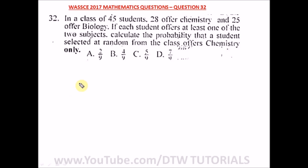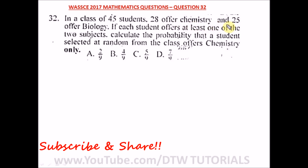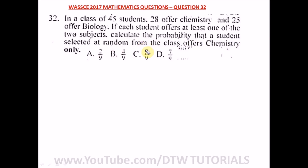Question 32 of WAEC 2017 Mathematics past questions. It says: in a class of 45 students, 28 offer chemistry and 25 offer biology. If each student offers at least one of the two subjects, calculate the probability that a student selected at random from the class offers chemistry only.